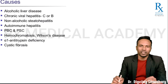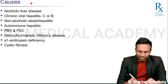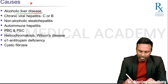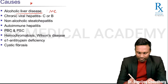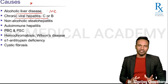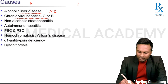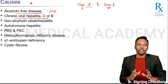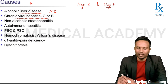Let's understand the various causes of chronic liver disease. First, we have alcoholic liver disease — an evergreen substance and the most common cause of chronic liver disease. Then we have chronic viral hepatitis. Among the hepatotropic viruses, hepatitis A and hepatitis E can cause only acute hepatitis, not chronic — be it acute hepatitis or acute liver failure.